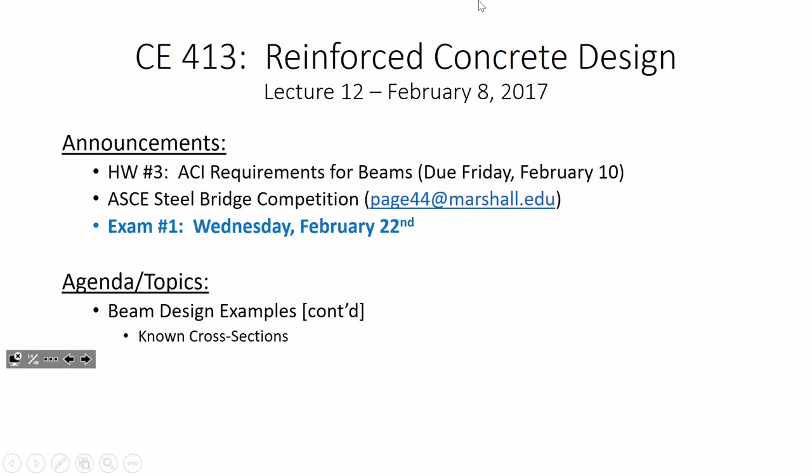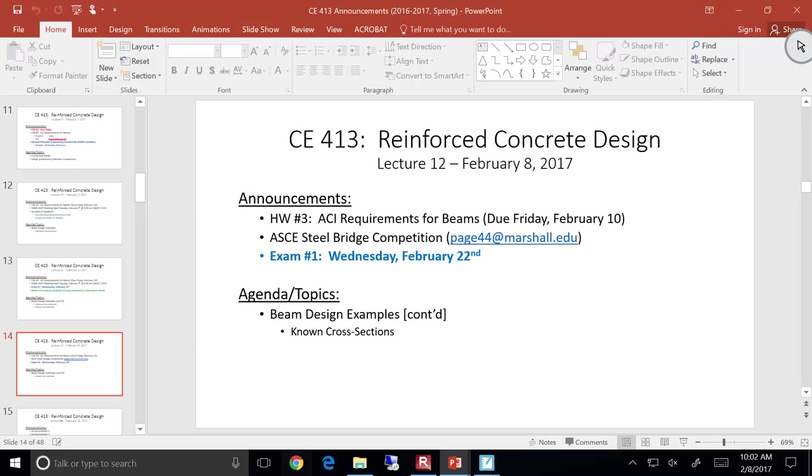Today we're going to continue on with some beam design examples. Today's design example is probably going to be a lot simpler than what we did last time. The example we did last time had an unknown cross section — we didn't have a clue what the beam looked like. In unknown cross-section territory, there are two unknowns: the geometry — how wide and how deep the beam is — and the steel. So we had to make some guesses and assumptions.